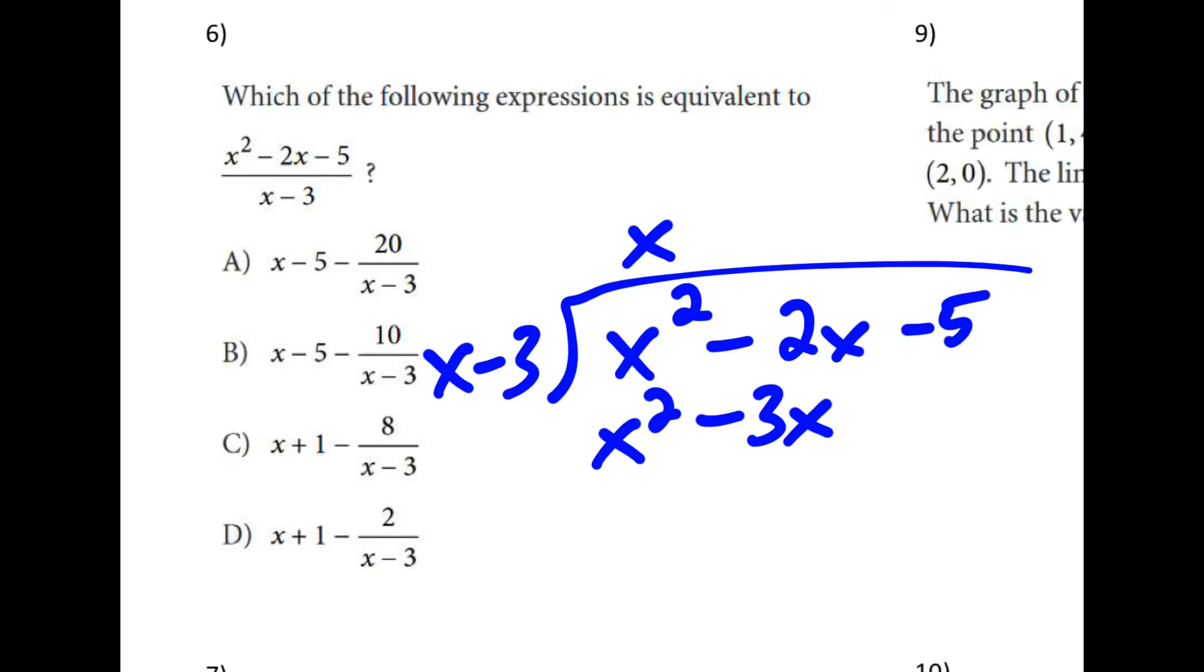We're going to subtract this straight down. So I'm going to put a subtraction and a parenthesis. So 0x squared and then negative 2 plus 3 will leave me with 1x. And I'll bring down the minus 5. How many times does x minus 3 go into this? Well, it turns out to be one time.